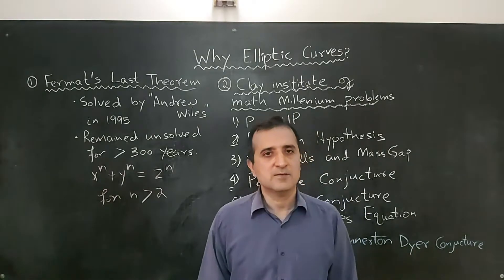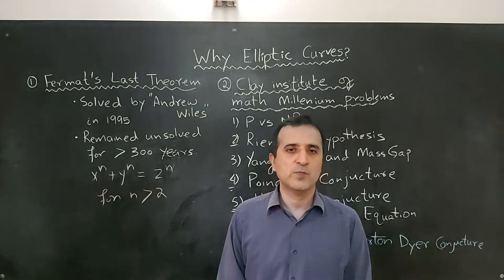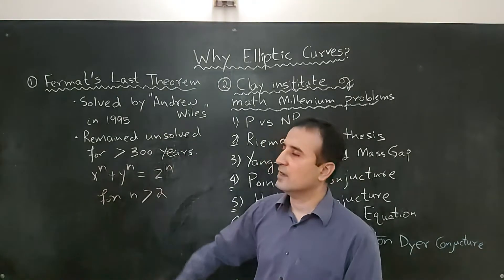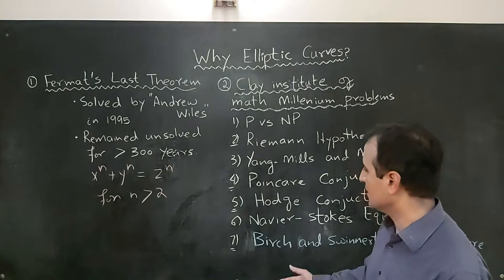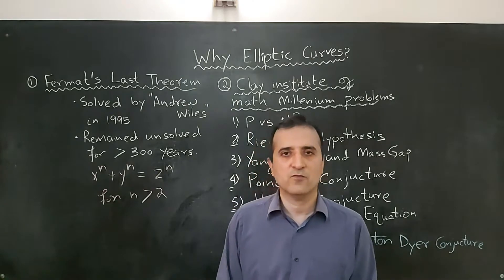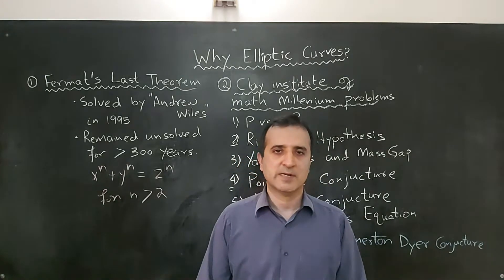So you can say that elliptic curves can help you get the Abel prize, which is considered to be the Nobel prize in mathematics as Andrew Wiles was rewarded with the Abel prize. Similarly, elliptic curves can reward you one million dollars if you are able to solve one of the problems offered by the Clay Institute of Mathematics.